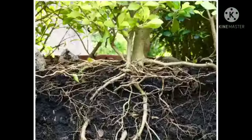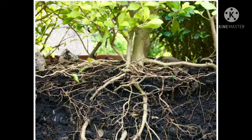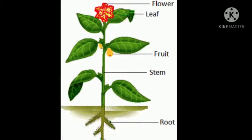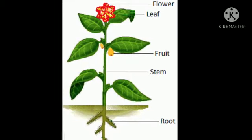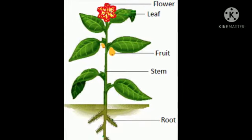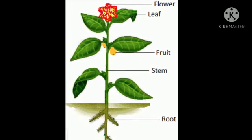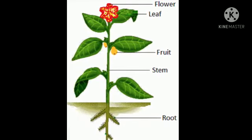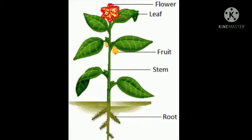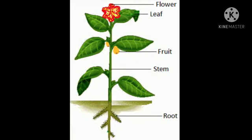This is the last part of a plant — its name is roots. Its main function is to fix the plant to the soil, and they also absorb water and minerals from the soil. You can see a picture on your screen. Here are all the parts of the plant we discussed in this lecture: flower, leaf, fruit, stem, and root.